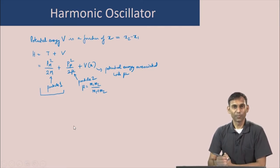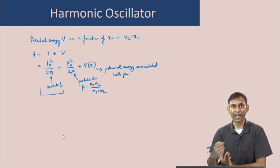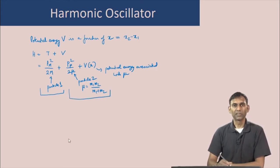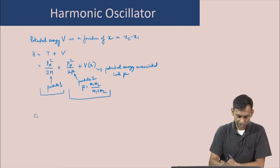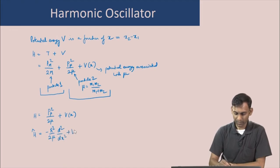The motion of the center of mass has no force acting on it and is just a constant-velocity translation. The real energy quantization is due to the internal motion, given by the second part of the Hamiltonian. The Hamiltonian of interest is H = p_μ²/(2μ) + V(x), which as a quantum mechanical operator is: −ℏ²/(2μ) · d²/dx² + V(x).